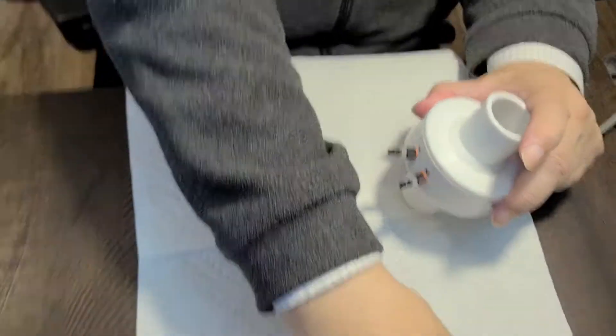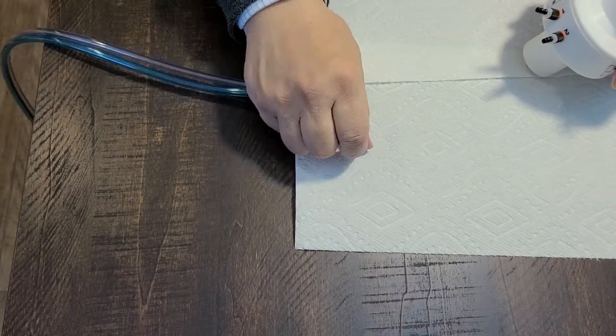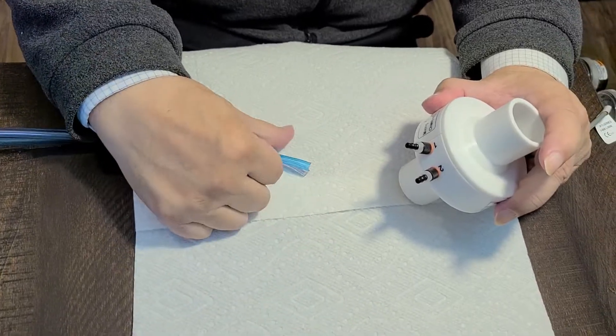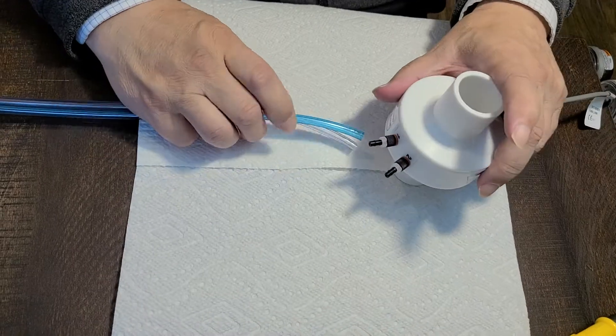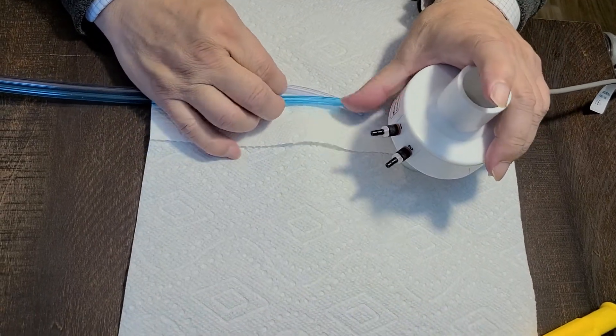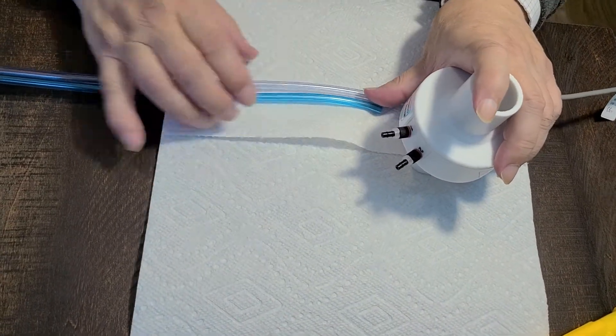Now, last step. Blue care tube. You need to make sure blue care tube is not twisted. That's it.